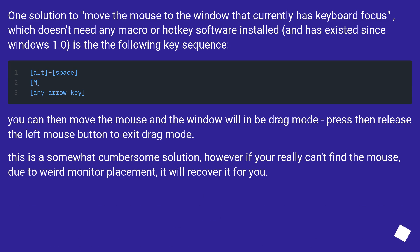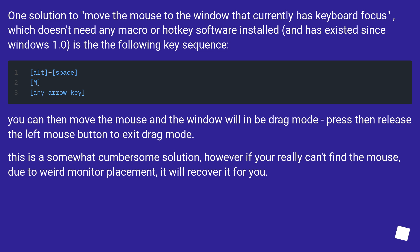One solution to move the mouse to the window that currently has keyboard focus, which doesn't need any macro or hotkey software installed and has existed since Windows 1.0, is the following key sequence. You can then move the mouse and the window will be in drag mode; press then release the left mouse button to exit drag mode. This is a somewhat cumbersome solution, however if you really can't find the mouse due to weird monitor placement, it will recover it for you.